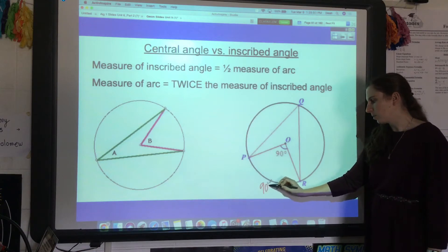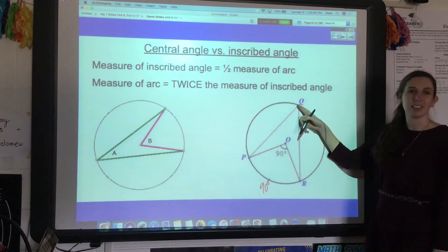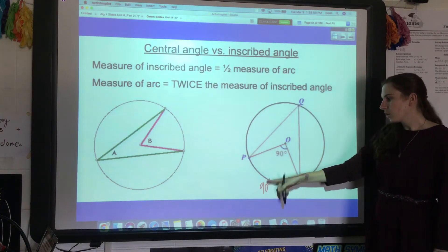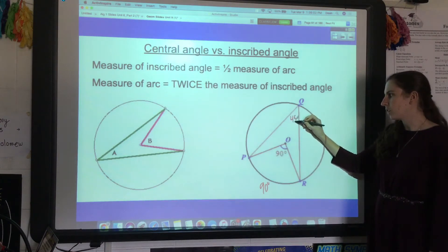We measure arcs by the central angle. An inscribed angle, which has its vertex on the circle, is always half the arc or half the central angle. So in this case it would be 45 degrees.